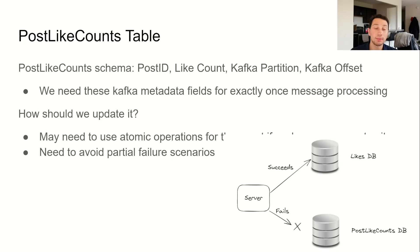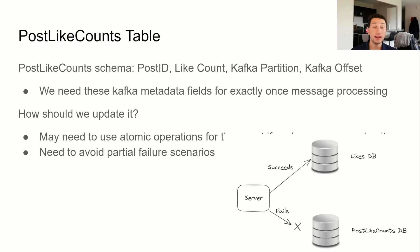One naive way to update this table would be to do so right when a user likes a post. For starters, this would mean that we'd have hundreds of updates to the count on the same popular post. Since this is a counter, we'd need to use atomic operations to ensure that we don't lose any updates from concurrent writes. Worse yet, we're also prone to bad partial failure scenarios — the write to the likes table could go through, but the write to the post like counts table could fail, resulting in the two tables being in an inconsistent state.